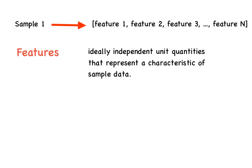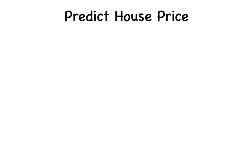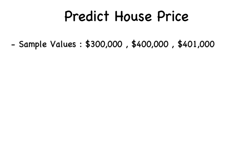Features are ideally independent unit quantities used to represent a particular characteristic of sample data. Let's consider the problem of determining the price of a house. Since the price takes continuous values like $300,000, $400,000, $401,000, this is a typical example of a regression problem.